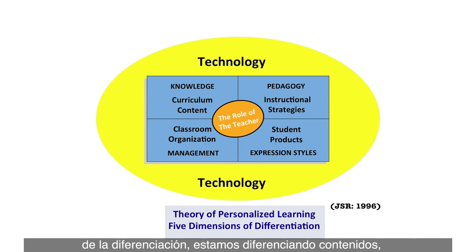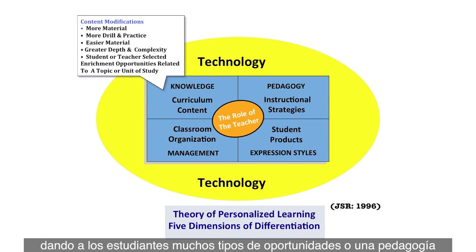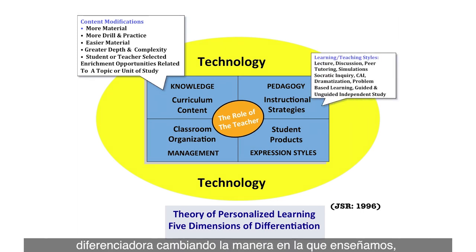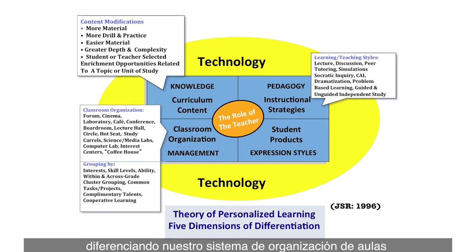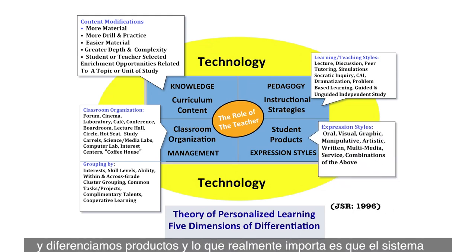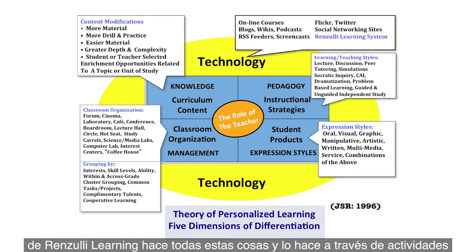Joe talked many years ago about five dimensions of differentiation. We're differentiating content by giving students very different kinds of opportunities; differentiating pedagogy by changing the way we teach; offering different kinds of content; differentiating our classroom organization systems — some students work on a computer, others write quietly, others use Renzulli Learning. We're also differentiating products. What's really important is that this Renzulli Learning system does all of these things through so many engaging, safety-checked activities.